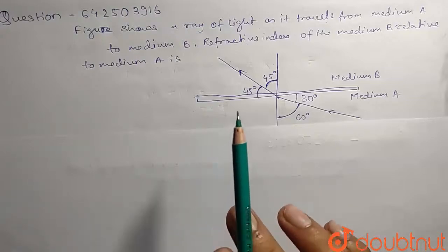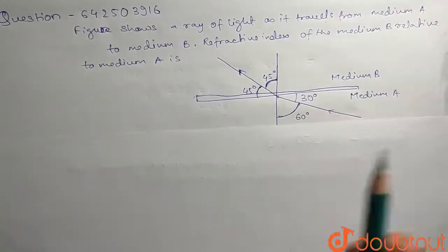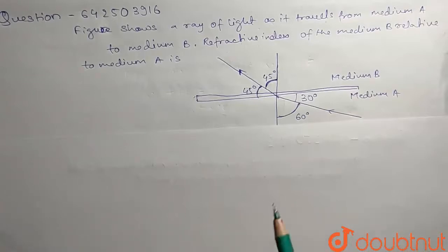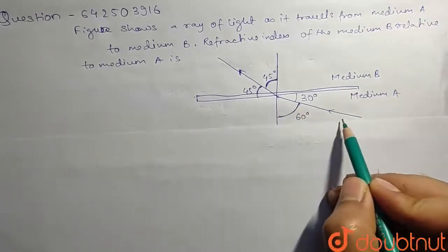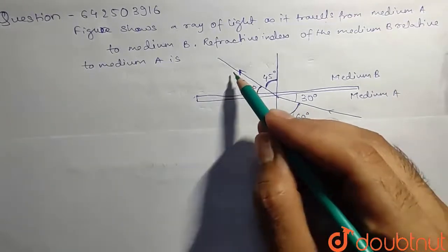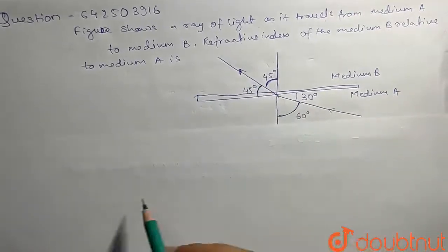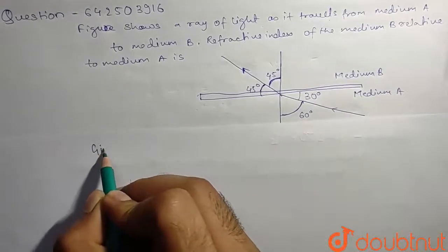We have to find the refractive index of medium of light traveling from medium A to B. What's given here is the angle of incidence is 60 degrees and angle of refraction is 45 degrees. So first we'll write what is given here.